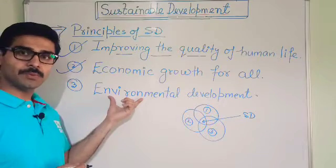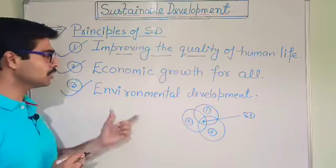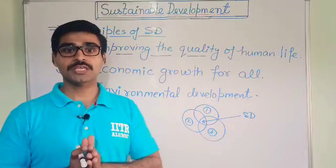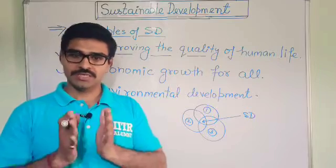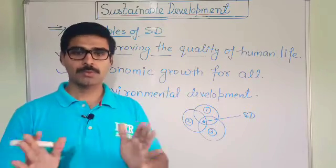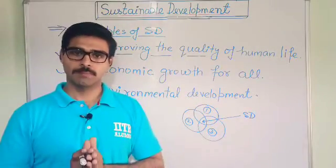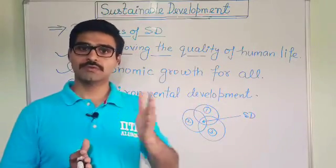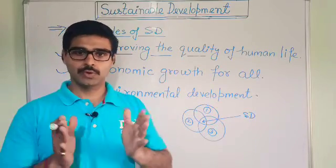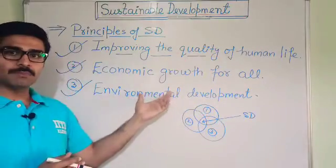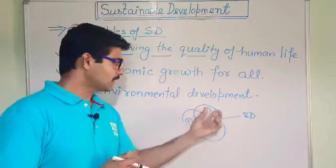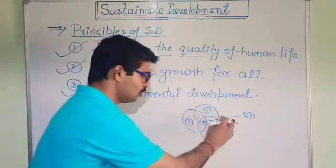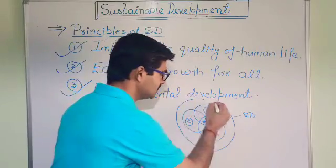The third principle, very important, says: with social and economic development, environmental development should run simultaneously. It means we should improve the quality of life, but we should also improve the environmental quality — increase forest cover, conserve biodiversity, and protect water bodies. These are the three basic principles of sustainable development: first, fulfill basic needs; second, economic growth for all; and third, environmental development. All these together make sustainable development.